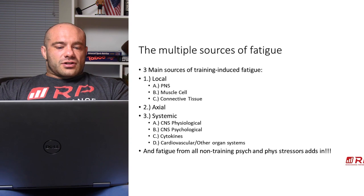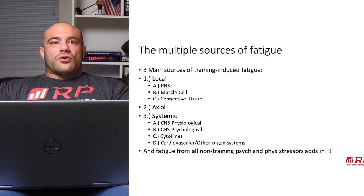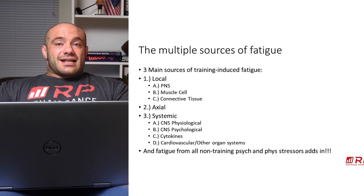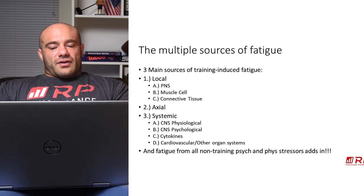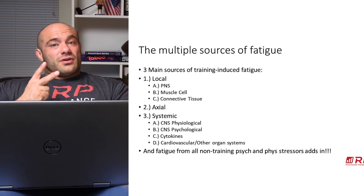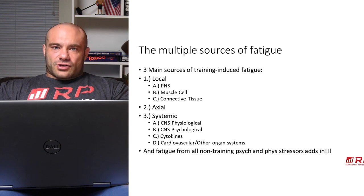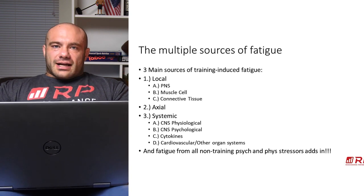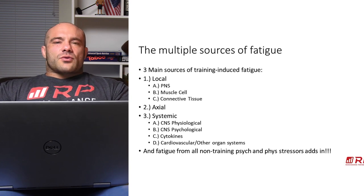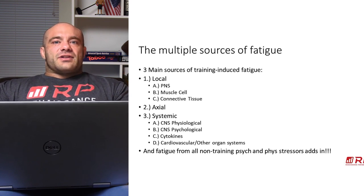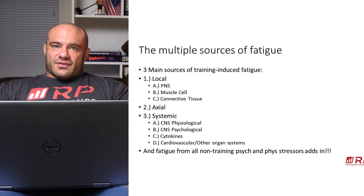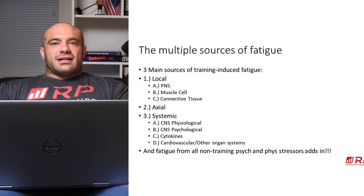Axial fatigue is essentially fatigue from compression of the spinal cord or taxation of the back muscles. Systemic fatigue affects your entire body and is composed of central nervous system fatigue — brain and spinal cord — of two different types: physiological and psychological. There's also fatigue from secretion of various chemicals called cytokines when you train really hard, and other organ systems, specifically the cardiovascular system, are affected predictably by training.